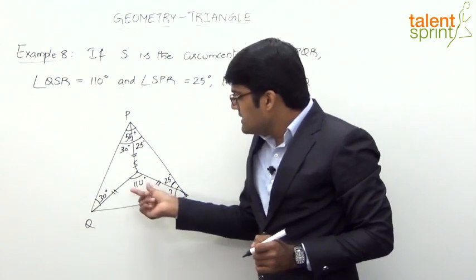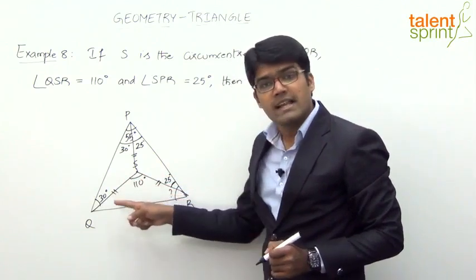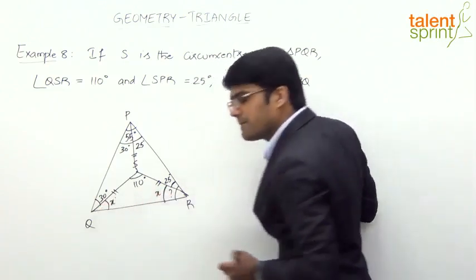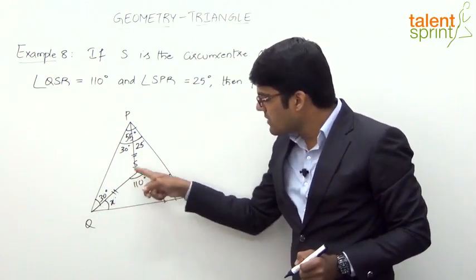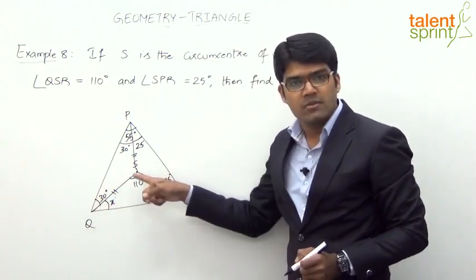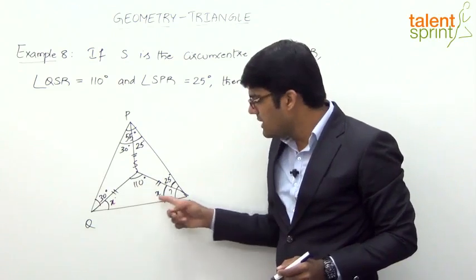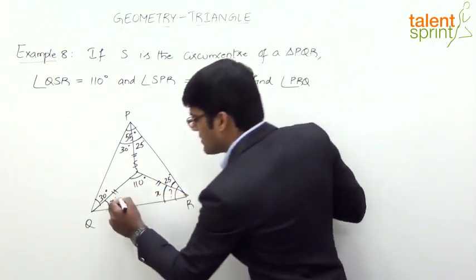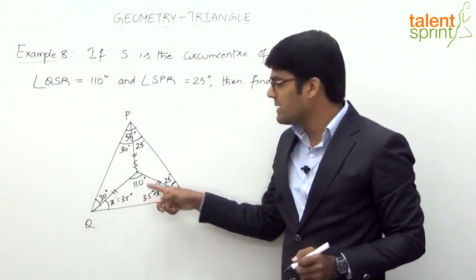Now, angle QSR is 110 degrees and SQ equals SR. The opposite angles in triangle SQR — let's call them X each — must be equal. In triangle SQR the total angles sum to 180 degrees. With 110 degrees at the center, 70 degrees remain, equally divided between the two base angles. So each of these angles is 35 degrees — that is, 35 plus 35 plus 110 equals 180 degrees.